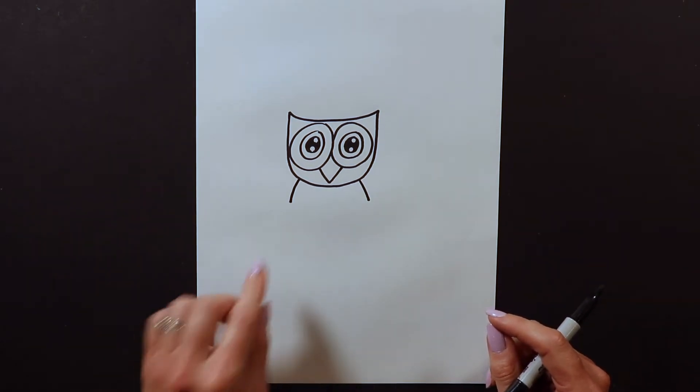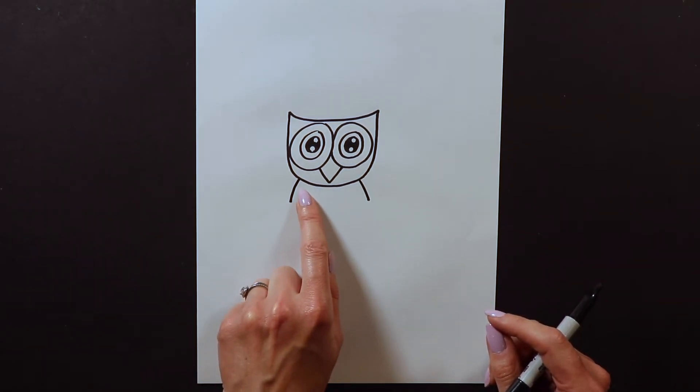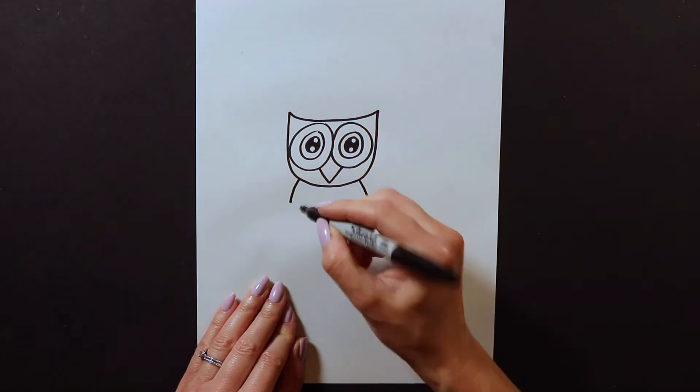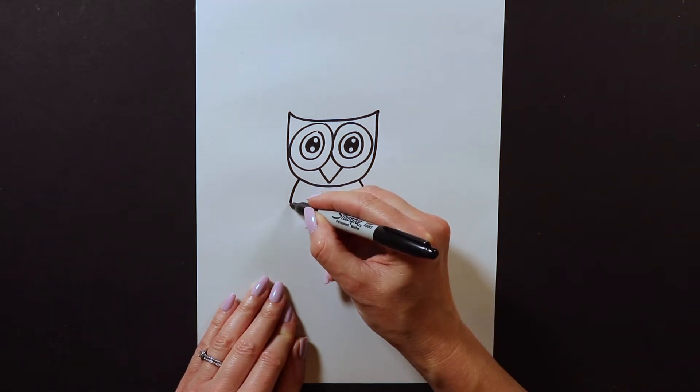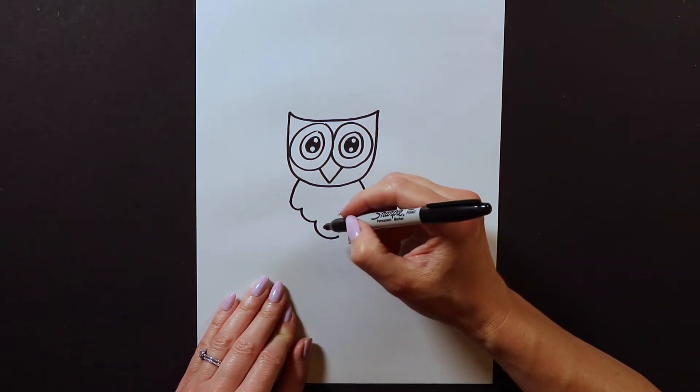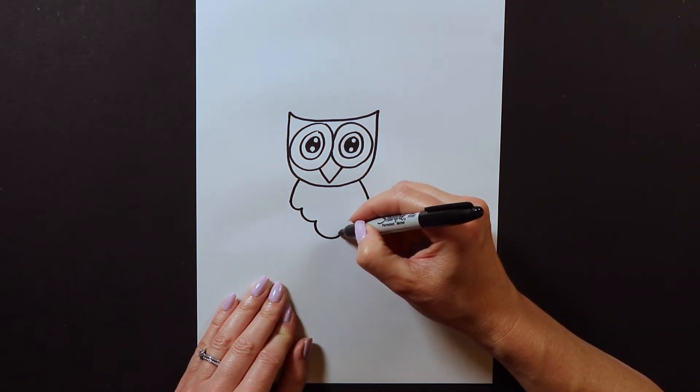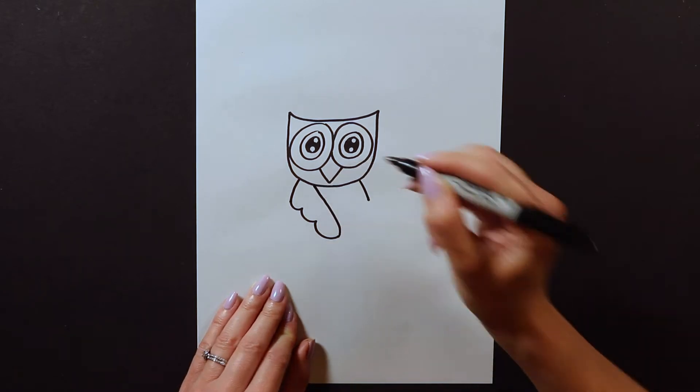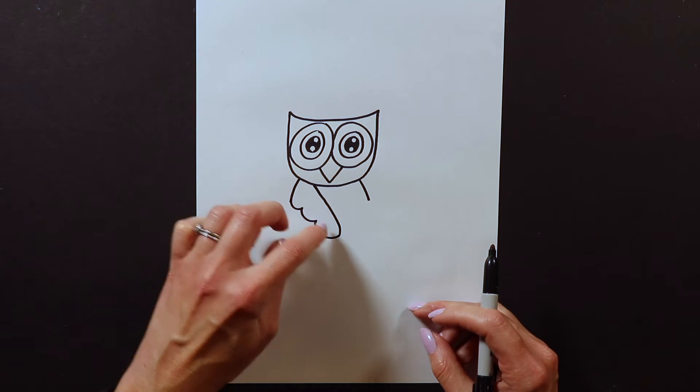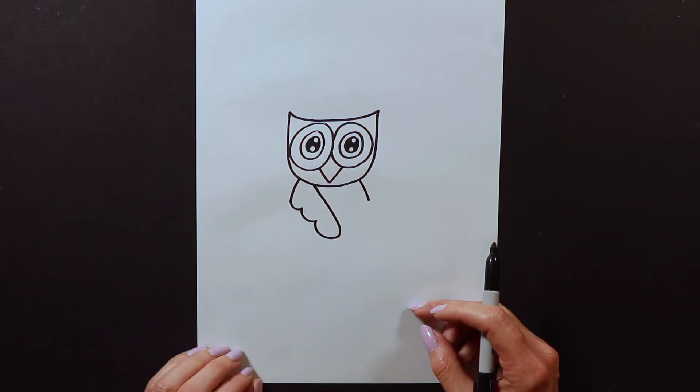I'm actually gonna draw one of its wings kind of holding the edge of the cup. To do that I'm gonna start at this edge and swoop swoop swoop like that. Then I'm gonna connect it back to the head. So it looks like its little feathered wing is just perched right on the edge of the cup.